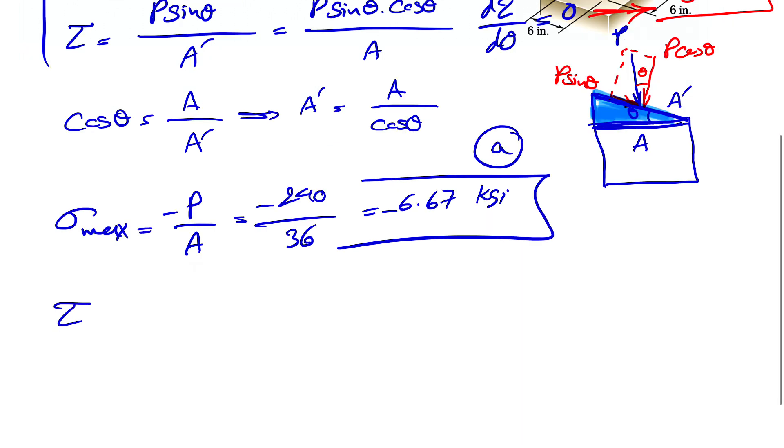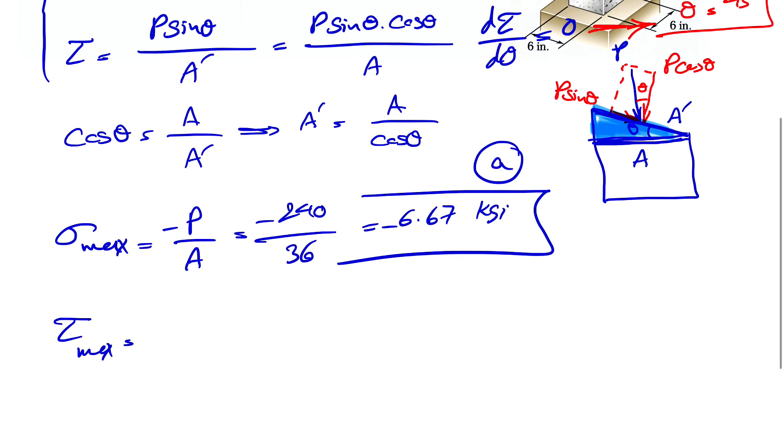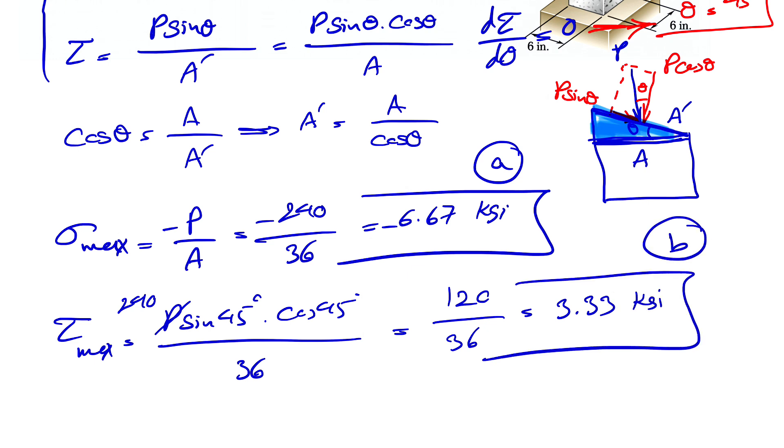For the maximum of the shearing stress, we have when theta equals 45 degrees. So we have P sine of 45 degrees times cosine of 45 degrees over A, same A of 36. Our P is also the same, 240 kips. And sine of 45 times cosine of 45 is going to be 0.5, so we'll have 120 divided by 36, which gives us 3.33 ksi as the maximum value of the shearing stress.